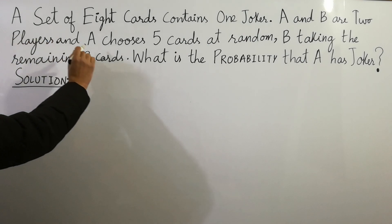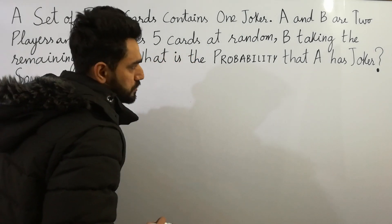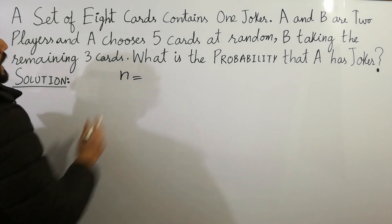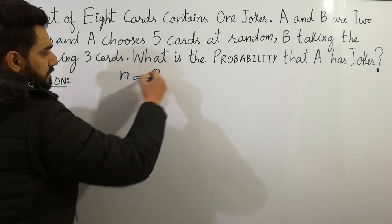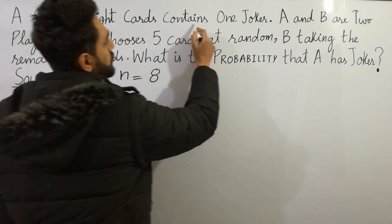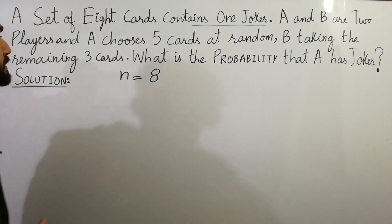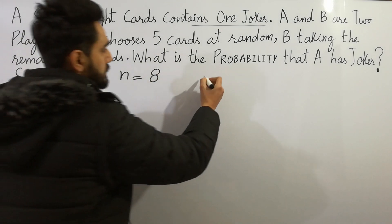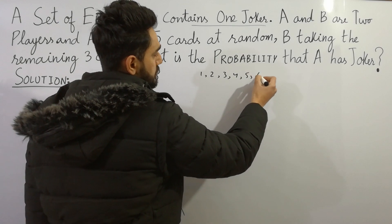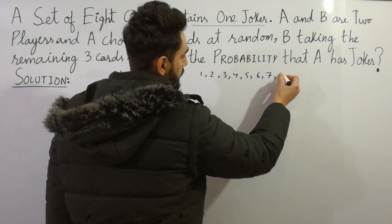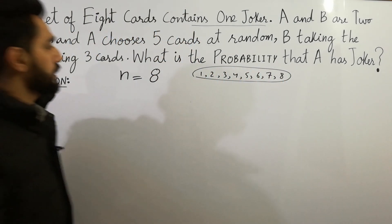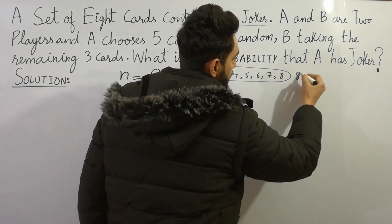A set of eight cards contains one joker. So first of all, the total cards are given here — n is equal to eight. This is the first point. Next, it contains one joker. That means in this set of eight, you can see here one, two, three, four, five, six, seven, eight — one of these is the joker. So eight minus one will be seven. Make note of that point.